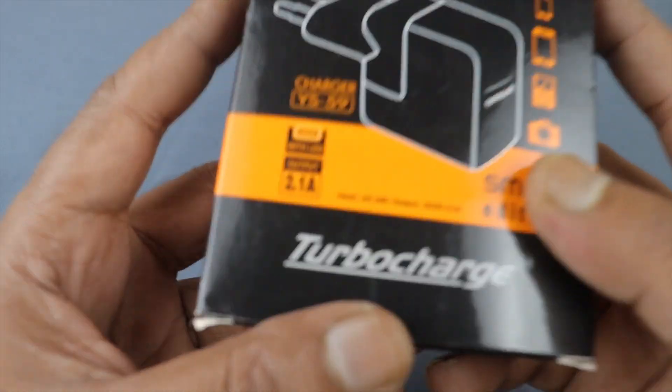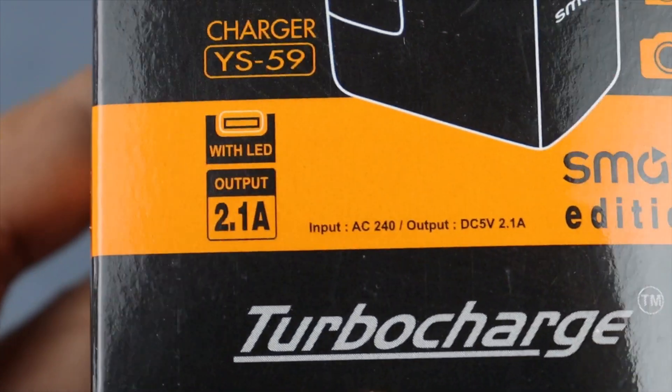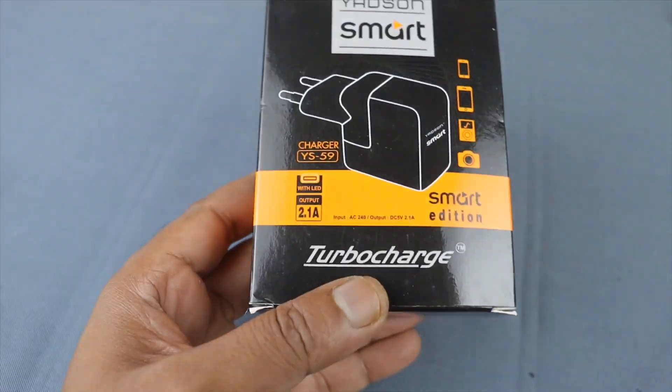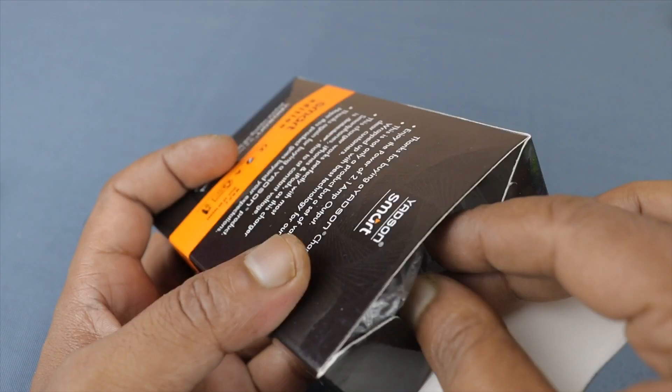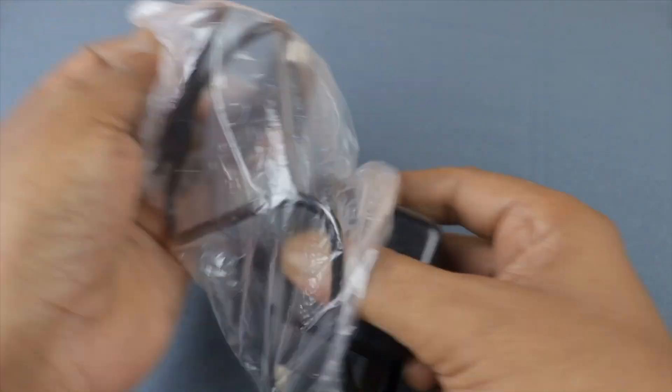Here is my mobile charger which I recently bought from a local store. It's rated 5V at 2.1A. Today in this video I'm going to show you how to make the output voltage adjustable. So let's open it first.